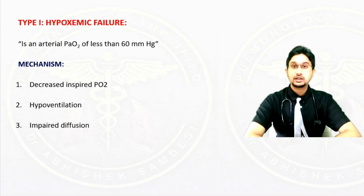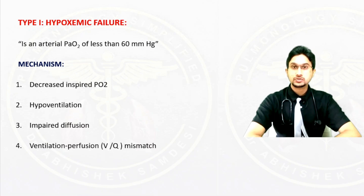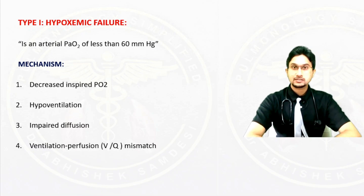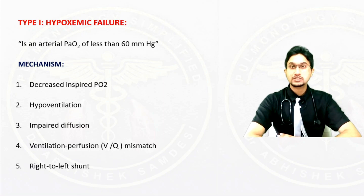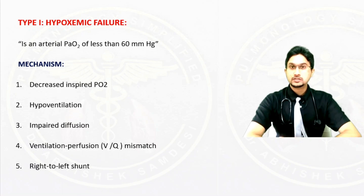Other mechanisms of Type 1 respiratory failure include impaired diffusion at the alveolo-capillary membrane, as in cases of ARDS; VQ mismatch, as in the case of pneumonias; and right-to-left shunt, as in pulmonary AV malformation or cardiac shunt defects with reversal of shunt. These are the mechanisms for hypoxemic or Type 1 respiratory failure.